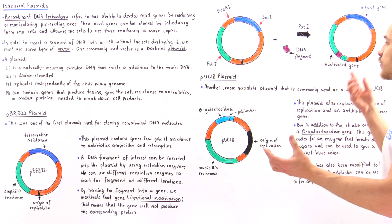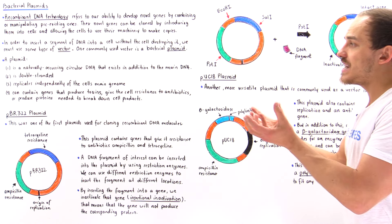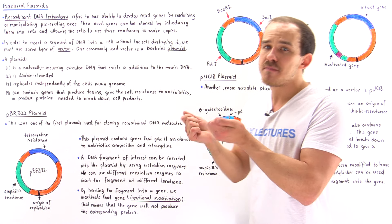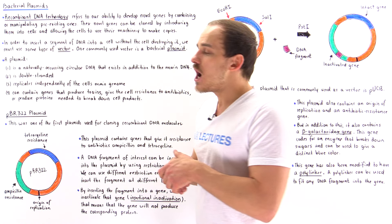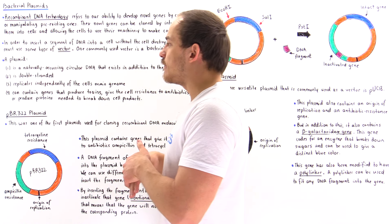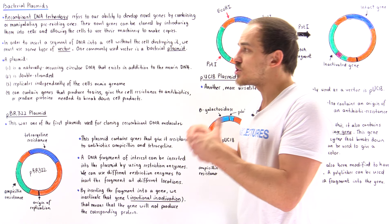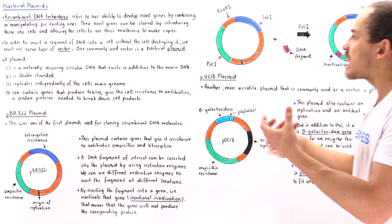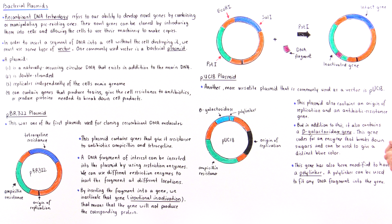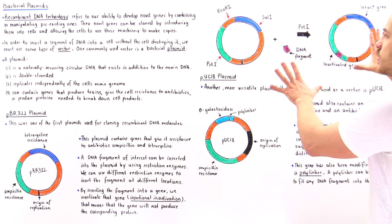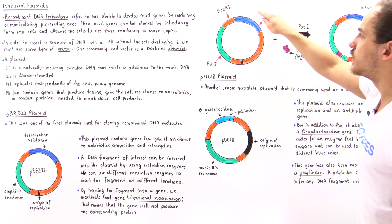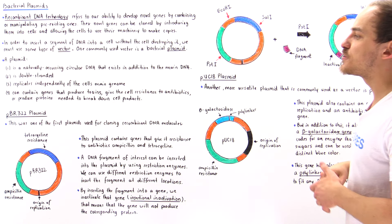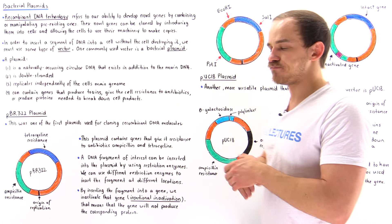We then force those cells to divide via binary fission, which replicates our DNA of interest. At the end, we can extract that DNA and have many, many copies of that DNA fragment. This is one of many different ways we can use these different genes as markers.